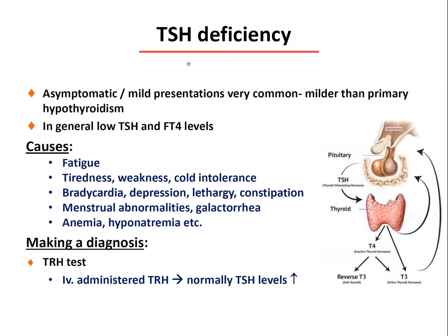TSH deficiency can be asymptomatic or may mimic primary hypothyroidism, presenting with low TSH and low free T4. Clinical symptoms are very similar to other hormone deficiencies, making it difficult to distinguish the cause: fatigue, tiredness, weakness, cold intolerance, bradycardia, depression, lethargy, constipation, menstrual abnormality, galactorrhea with highly increased TRH concentration, anemia, and hyponatremia. Diagnosis is made by administering TRH — normally TRH will elevate TSH concentration and further T4. If this does not occur, a pituitary problem is indicated.